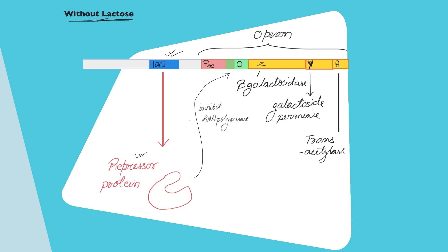If there is lactose, the lactose is going to bind to the repressor protein. Because of the binding, the shape of the repressor protein is going to change.